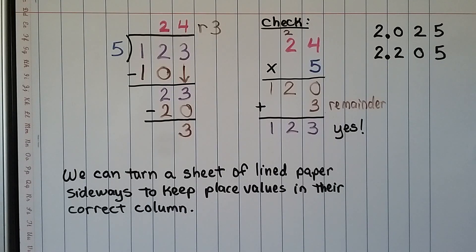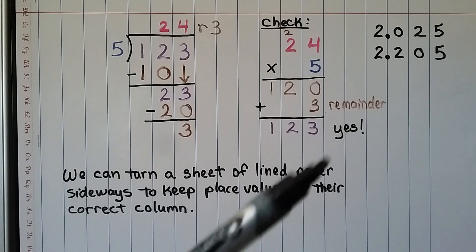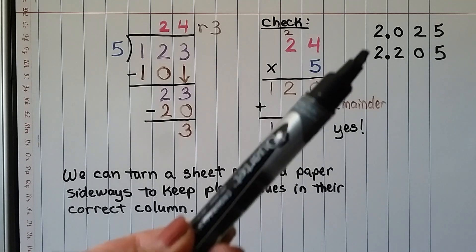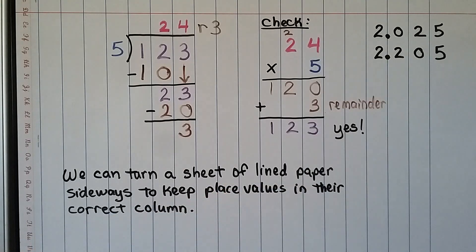We learned in the last chapter about division that turning a sheet of lined paper sideways can help keep place values in their correct columns for addition, subtraction, multiplication, or division. We can do the same for comparing decimals — it'll help us line up the decimal place values if we don't have a place value chart.